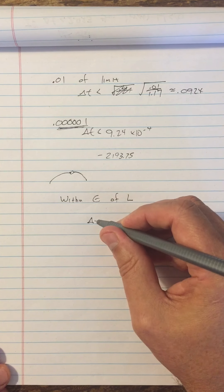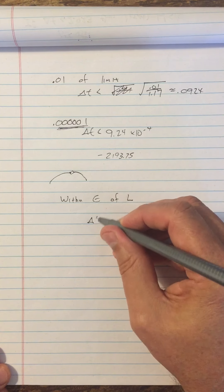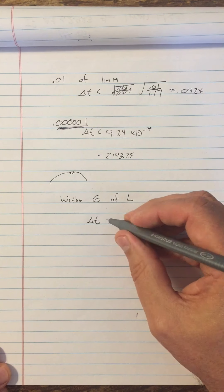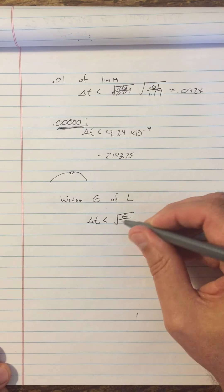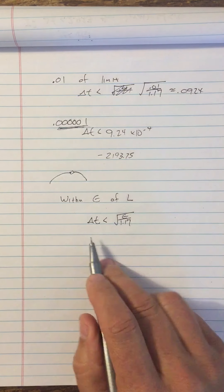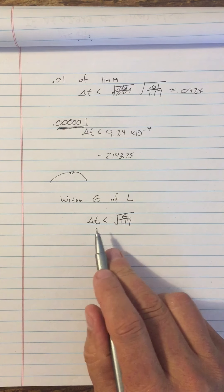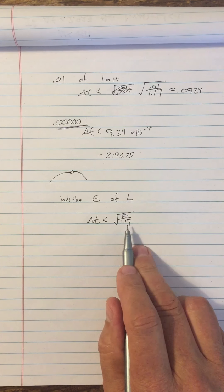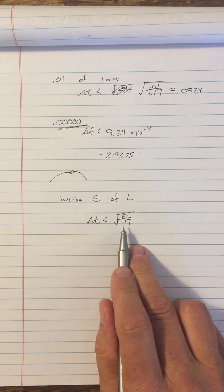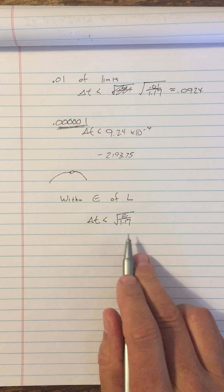So the answer is following this pattern that we can see here, delta T is less than the square root of epsilon over 1.17. So what's important about this, this is a function. Delta T is a function that depends on epsilon and it is defined for every positive epsilon. In fact, it's a positive number for every positive epsilon.